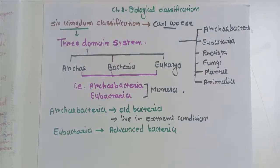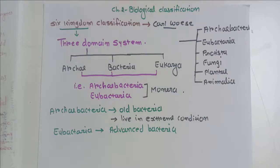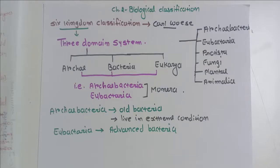This is the history of classification, starting with the basic and initial classification given by Aristotle and Linnaeus, which had many drawbacks based only on morphology. Today we follow Whittaker's classification because it is very advanced. In this chapter on biological classification, we classify all organisms and also study viruses, viroids, and lichens, which are not included in these kingdoms.